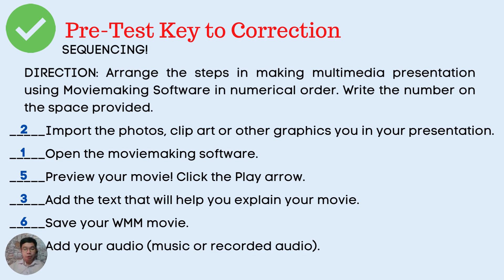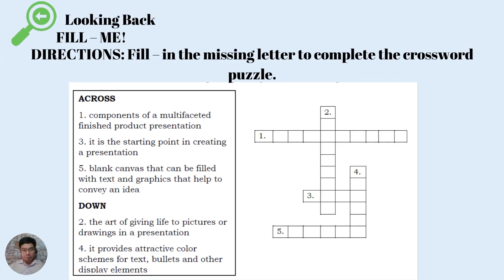Let us have a short review on the previous session. Fill in the missing letter to complete the crossword puzzle. Number one across: components of a multifaceted finished product presentation. Number two down: the art of giving life to pictures or drawings in a presentation. Number three across: it is the starting point in creating a presentation. Number four down: it provides attractive color and schemes for text, bullets, and other display elements. Number five across: blank canvas that can be filled with text and graphics that help to convey an idea.